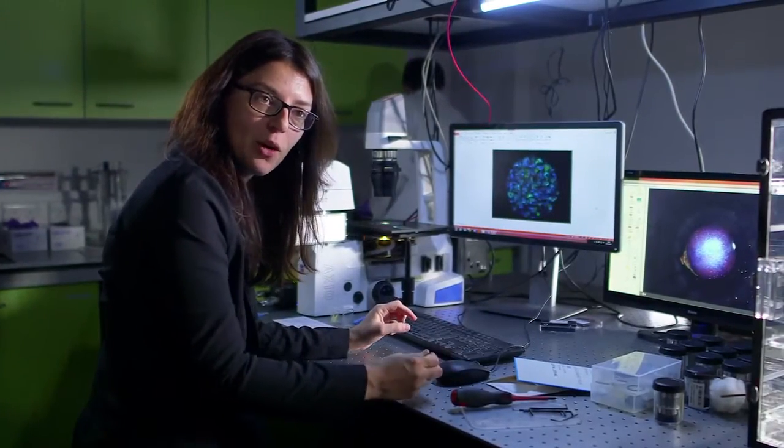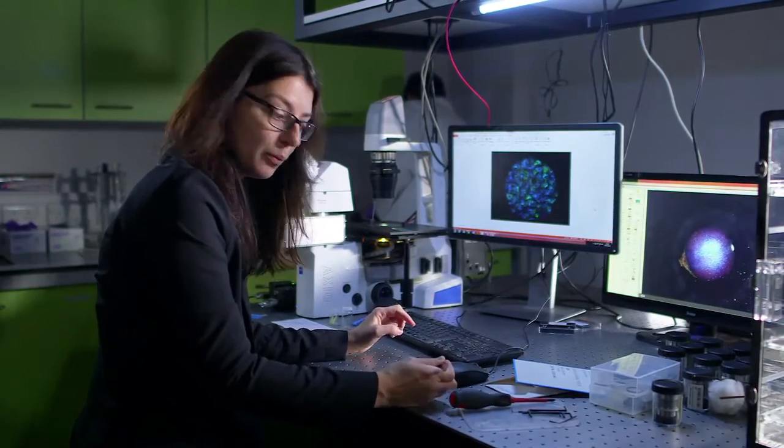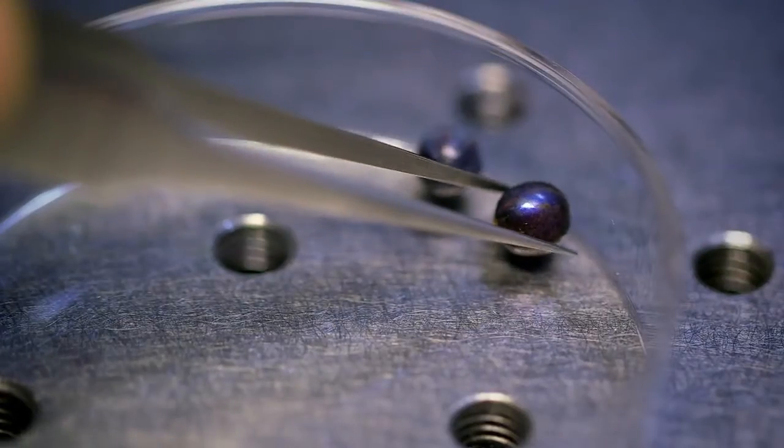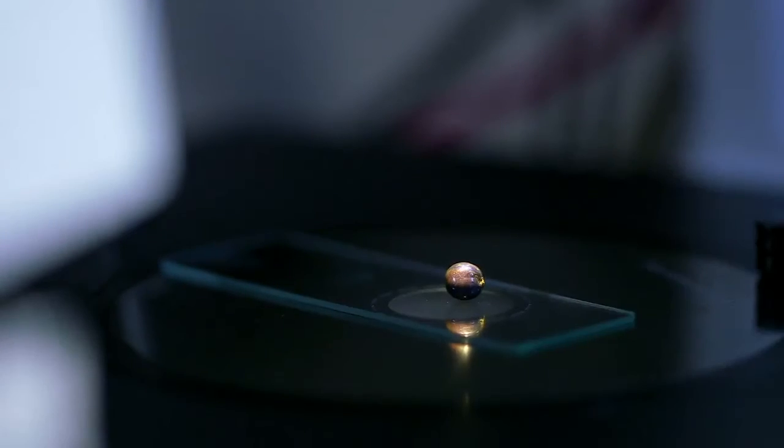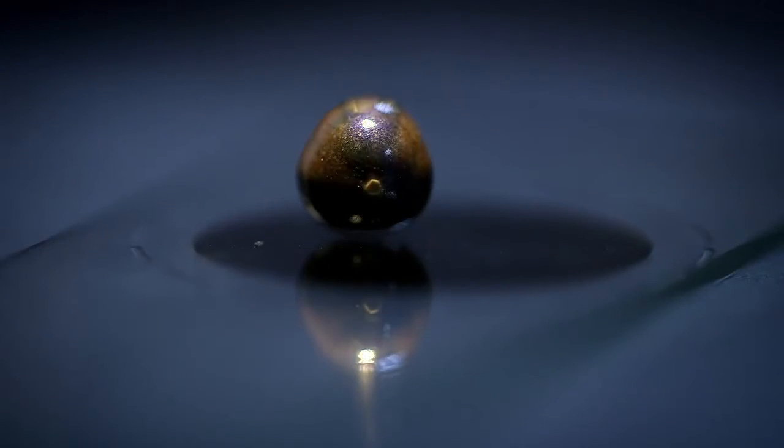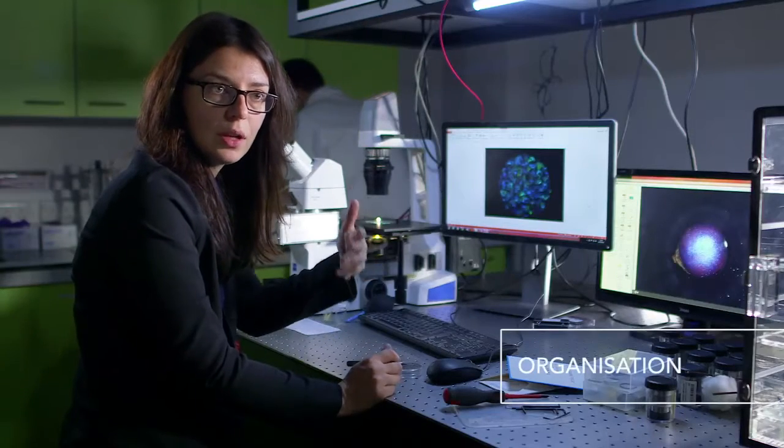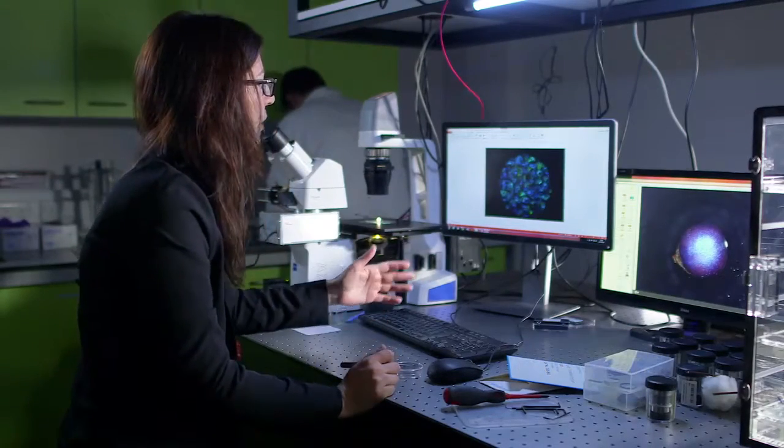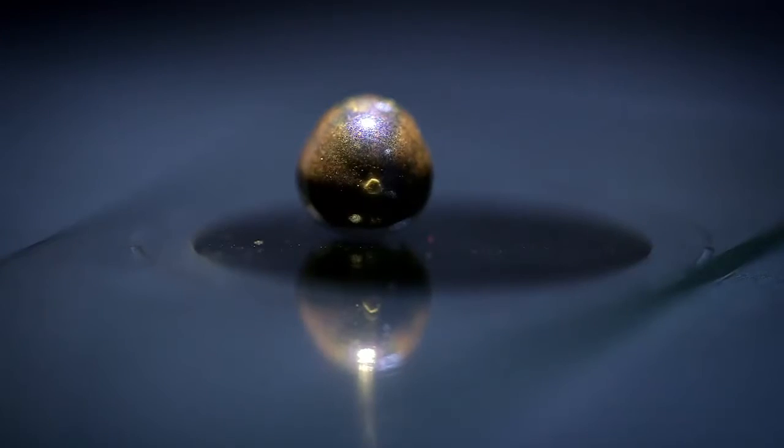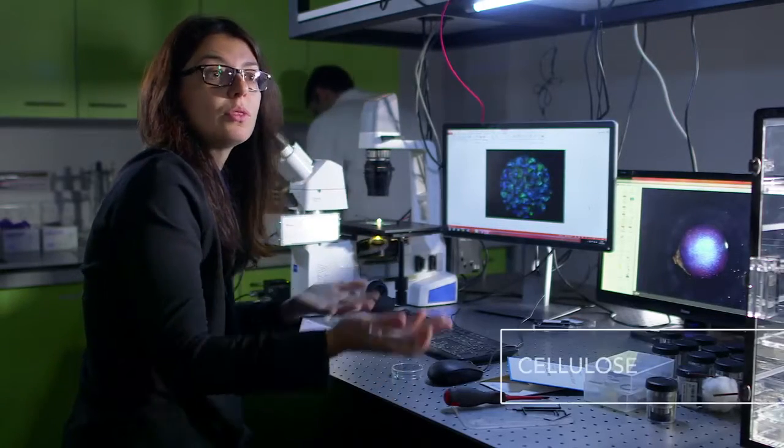In order to understand where the color of the Polya fruit comes from, we need to do an analysis using the Polya under an optical microscope. And using a special polarization filter, we are able to understand the kind of organization of the cellulose inside these fruits. And then you observe the strong blue color doesn't come from a pigment, but comes from cellulose.